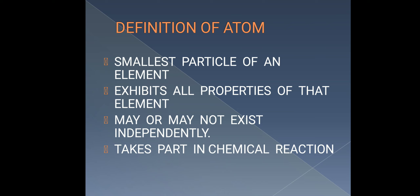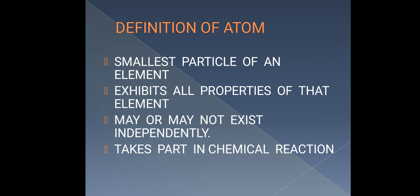The first key point for the definition of atom is that it is the smallest particle of an element. In the previous chapter, we have seen that matter or substances are categorized into two categories: pure substance and impure substance. Impure substance was mixture — we have already discussed about the mixture, its types, its constituents, and the methods of separation of mixtures.